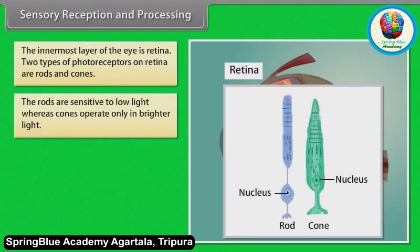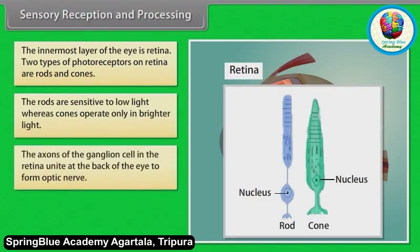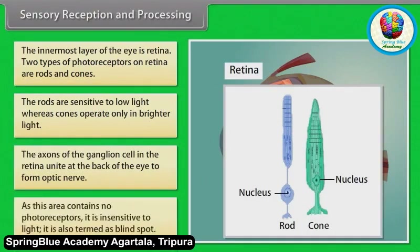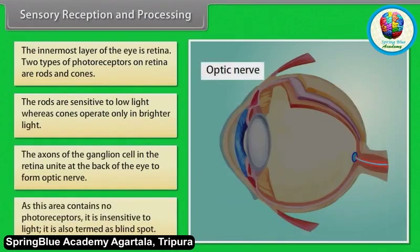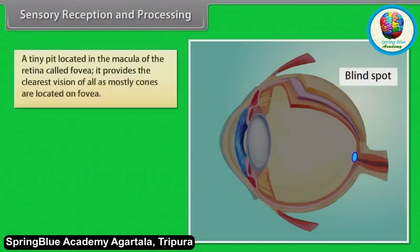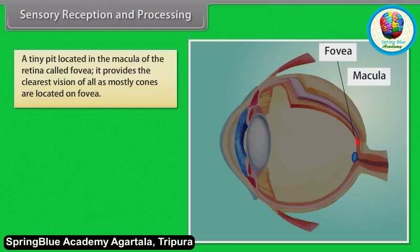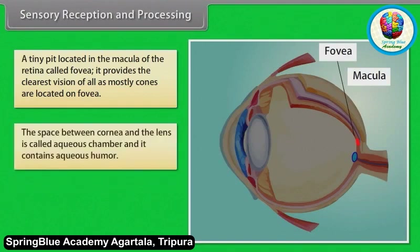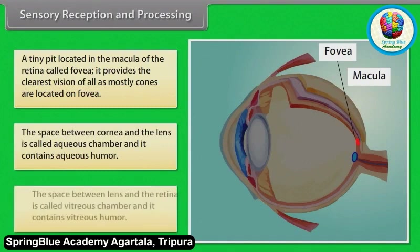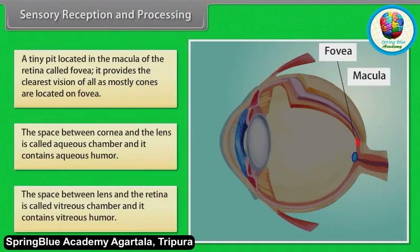The innermost layer of the eye is the retina. Two types of photoreceptors on the retina are rods and cones. Rods are sensitive to low light, whereas cones operate only in brighter light. The axons of the ganglion cells in the retina unite at the back of the eye to form the optic nerve. This area contains no photoreceptors and is insensitive to light — it is also termed the blind spot. A tiny pit in the macula of the retina called the fovea provides the clearest vision, as mostly cones are located there. The space between the cornea and lens is the aqueous chamber containing aqueous humor, and the space between the lens and retina is the vitreous chamber containing vitreous humor.